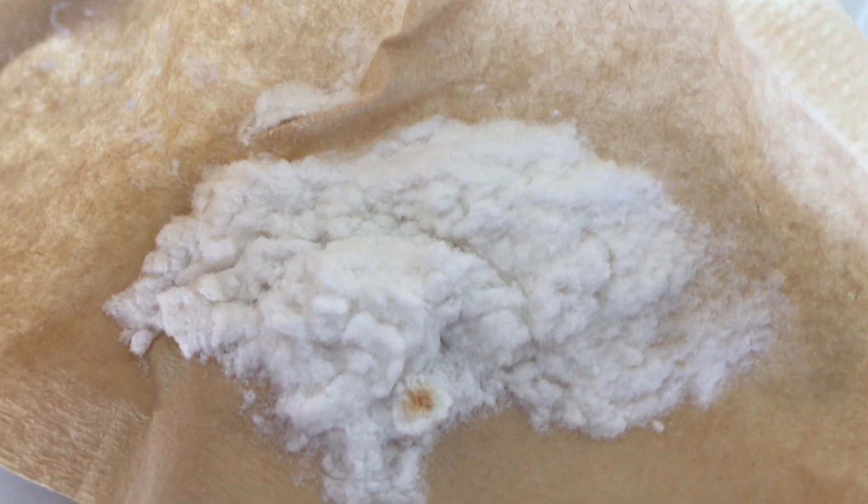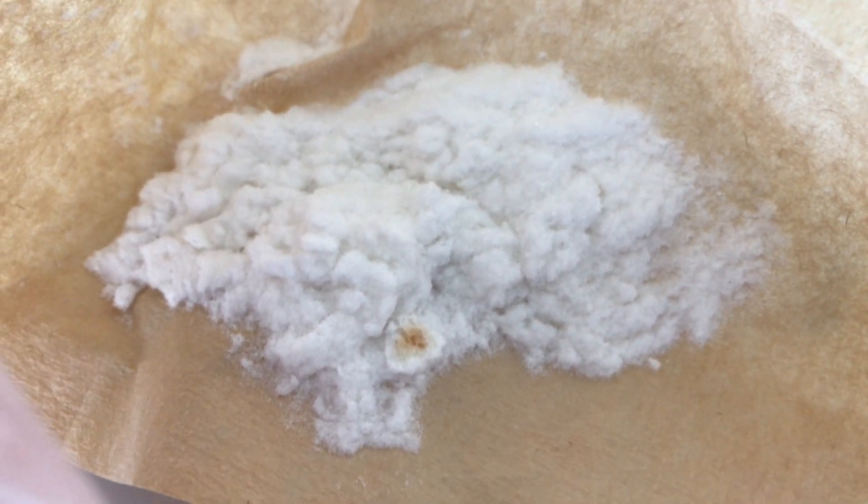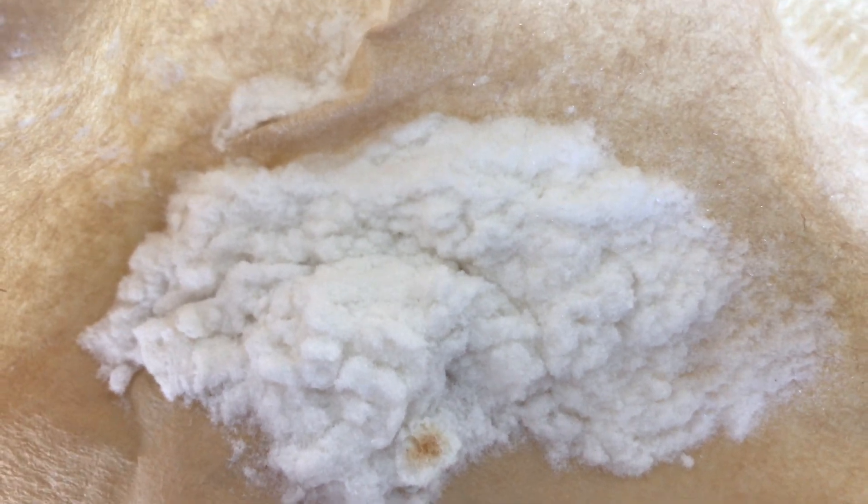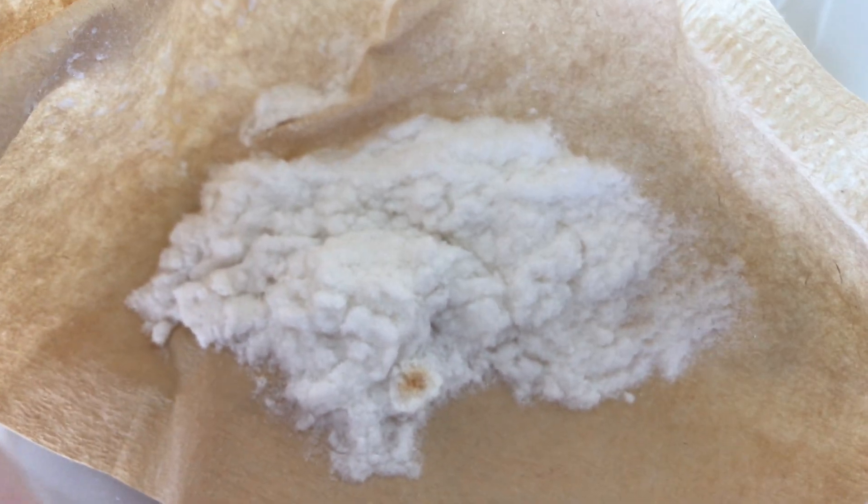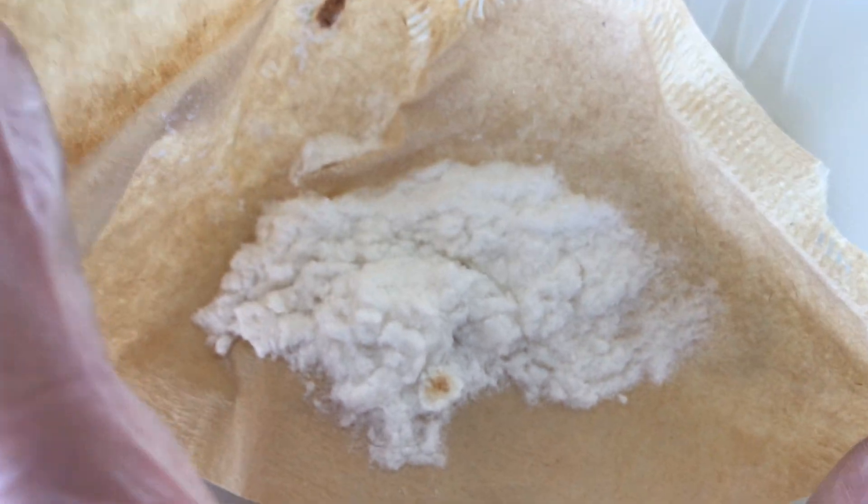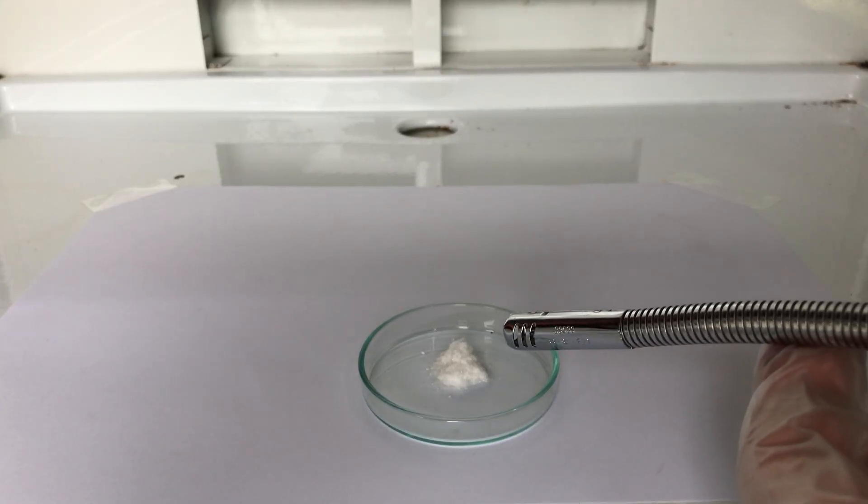This is mercury thiocyanate. It is a white, highly toxic mercury salt. When lit up, it reveals an interesting property. It produces a snake that can kill you without having to bite you.